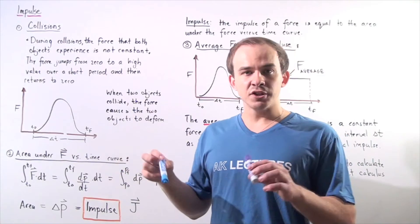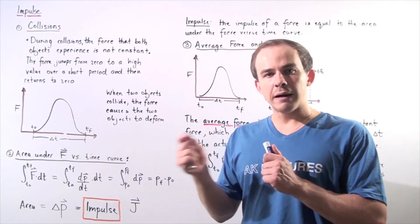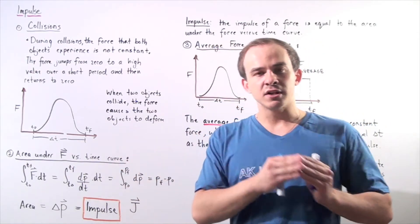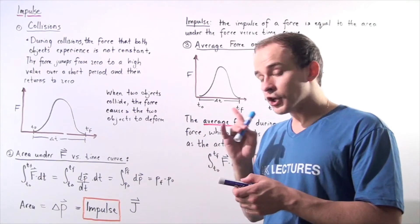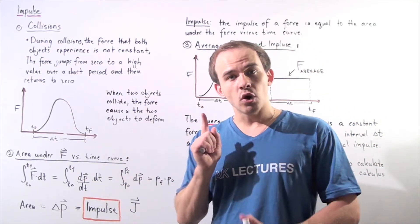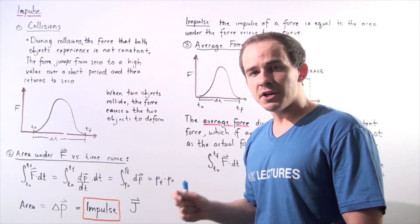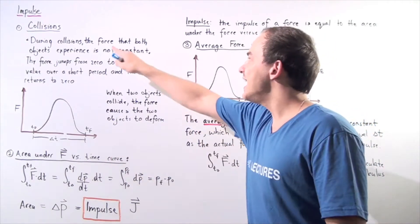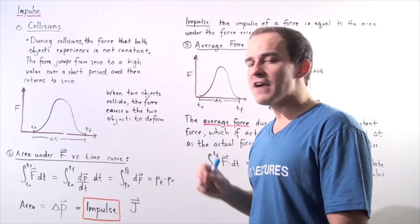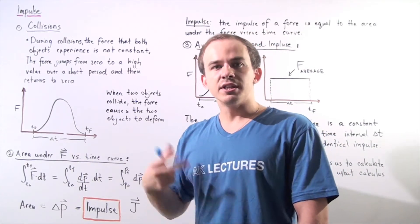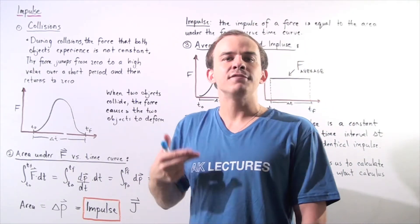Before collision and after collision, these objects aren't physically touching, and that means the contact force that either object feels is zero — there's no physical force that either object feels due to one another. But during collision, there is a force and this force is non-constant. The force that both objects experience due to one another — the contact force — is not constant. In fact, the force jumps from a value of zero to a high value over a very short time period, the time period during which our collision takes place.